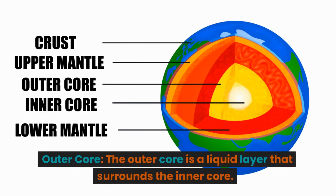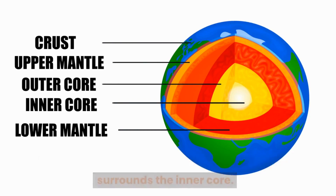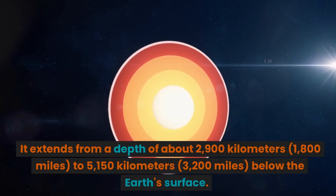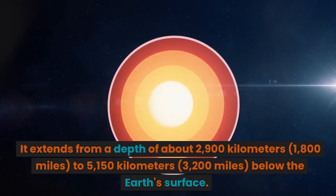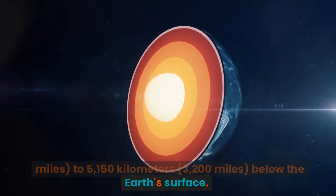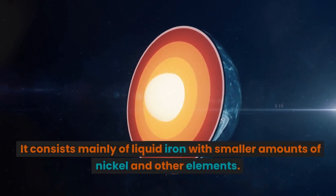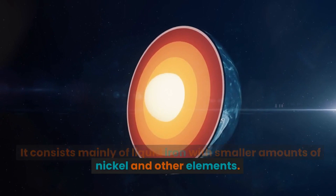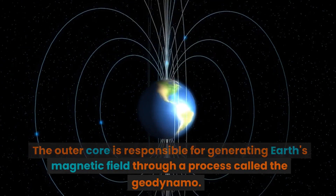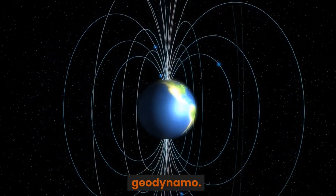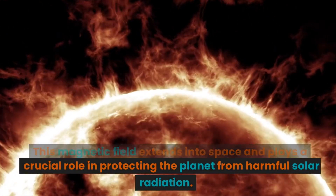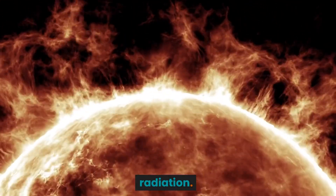Outer core. The outer core is a liquid layer that surrounds the inner core. It extends from a depth of about 2,900 km to 5,150 km below the Earth's surface. It consists mainly of liquid iron with smaller amounts of nickel and other elements. The outer core is responsible for generating Earth's magnetic field through a process called the geodynamo. This magnetic field extends into space and plays a crucial role in protecting the planet from harmful solar radiation.